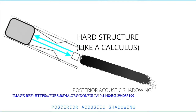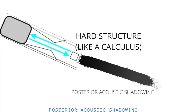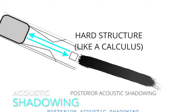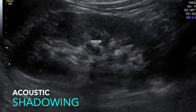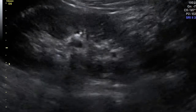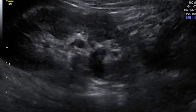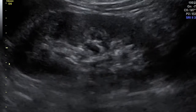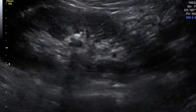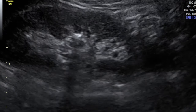Acoustic shadowing is caused by severe attenuation of the beam at a particular interface, resulting in very little sound being transmitted beyond that interface. Usually the attenuating tissue is a dense structure, for example a stone in the gallbladder or kidney. It always occurs at interfaces with large acoustic mismatch, such as soft tissue and bone or calculus. This attenuation is usually due to absorption or reflection of the sound waves.